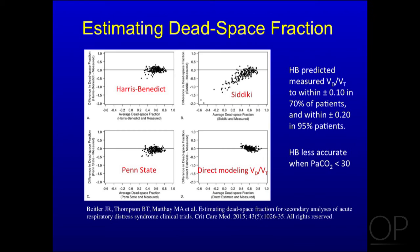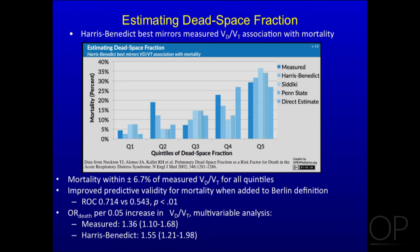If you took all 95% of the patients, the standard deviation was 0.20, which is quite a lot. It was also less accurate when the PCO2 was less than 30. So if you had to estimate, the Harris-Benedict would be the one to use, but it's not terrific. Compared to all the others, Harris-Benedict best mirrored the actual measured VD — within 7% in all quintiles. It did improve predictive validity for mortality when added to the Berlin definition, which lacked patients in whom dead space was measured.